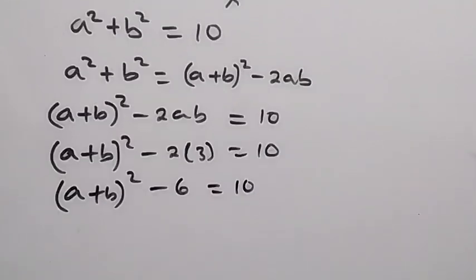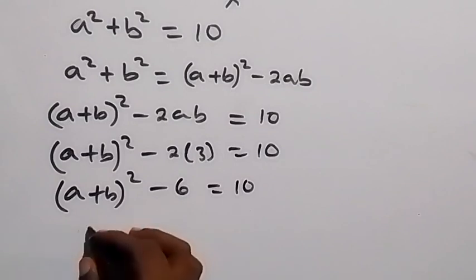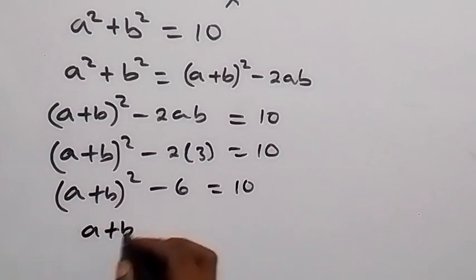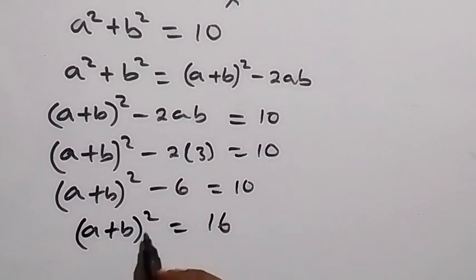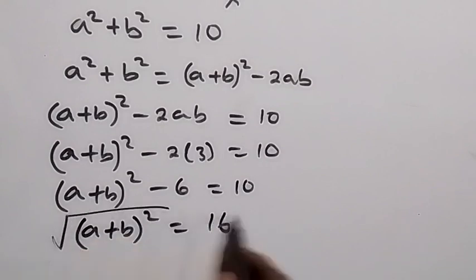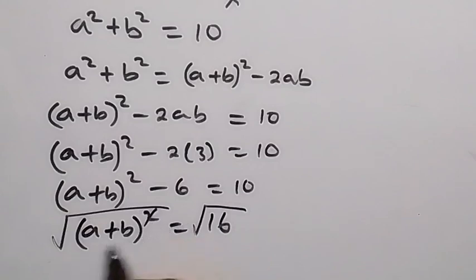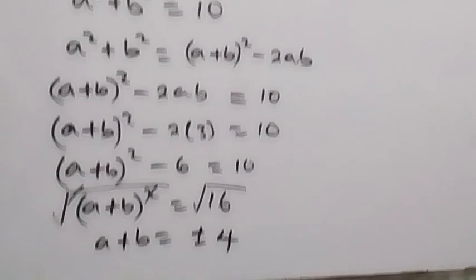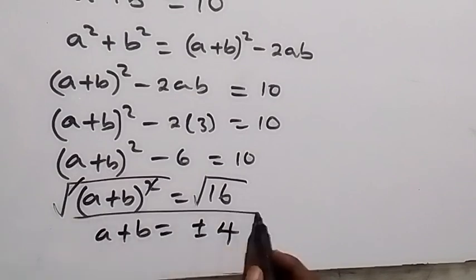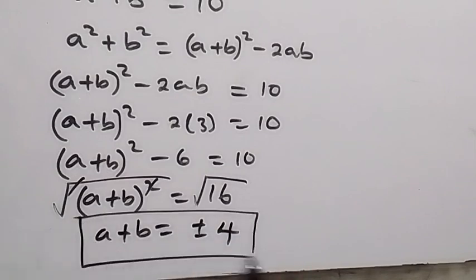Taking minus 6 to the other side it becomes plus, so 10 plus 6 is 16. We have a plus b squared equals to 16. Finding the square root on both sides, the square cancels with the square root, and here we have a plus b equals to plus or minus 4. And here we have the solution to the problem: a plus b equals to plus or minus 4.